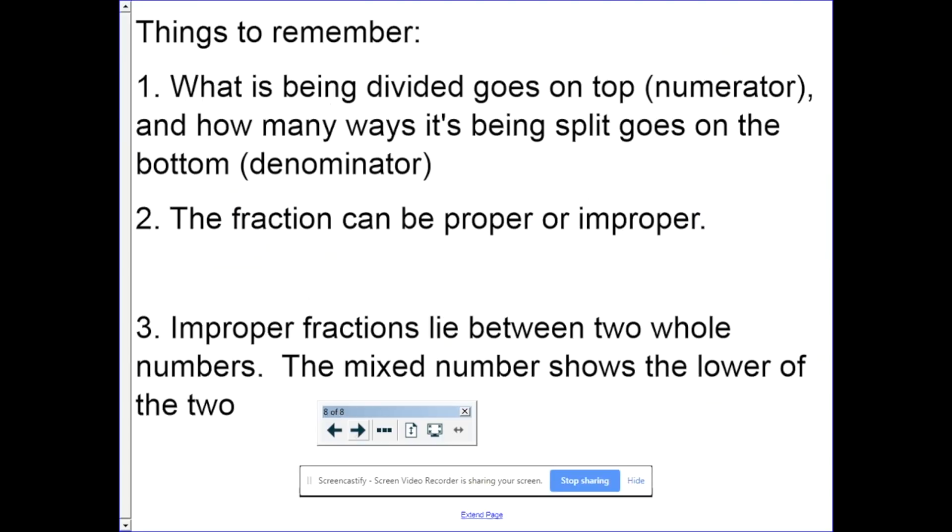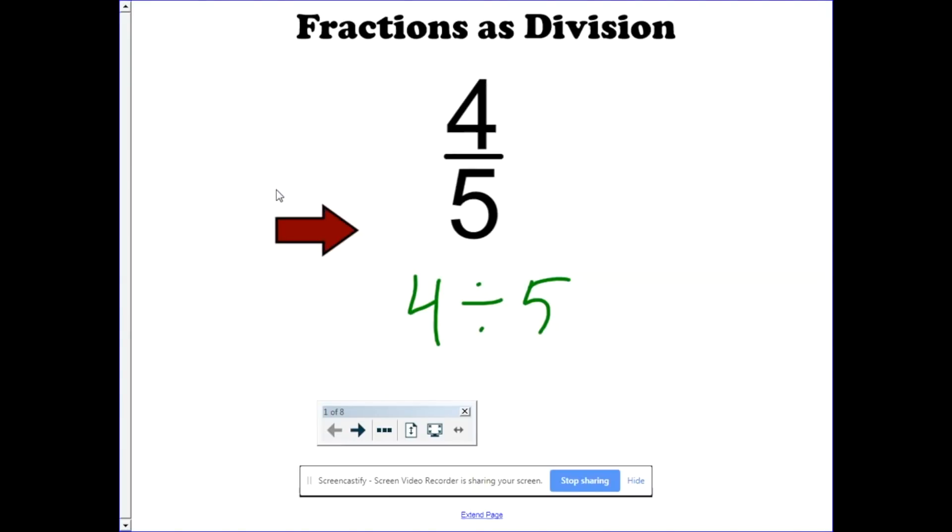Things to remember. First of all, whatever's being divided goes on top. It's the numerator. And how many ways it's being split goes on the bottom, or the denominator. So, if I have 32 ninths, that's the same thing as 32 divided by nine. They're both division problems. The fraction bar means divided!